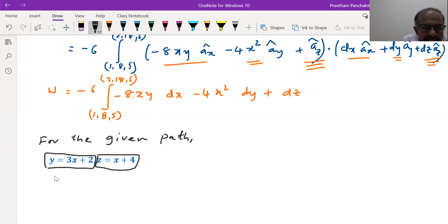So wherever y is there, let us put 3x plus 2, and wherever z is there, let us put x plus 4. Finally, y is replaced by x term and z is also replaced by x term. We will be having only x component. This y equals 3x plus 2 will be fine. But once y is removed, we should remove dy also. So differentiate this equation.